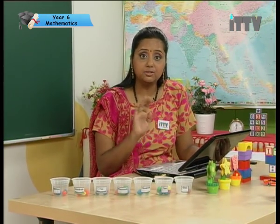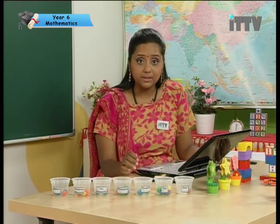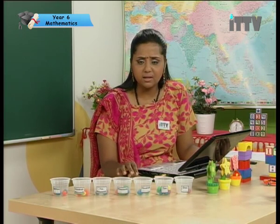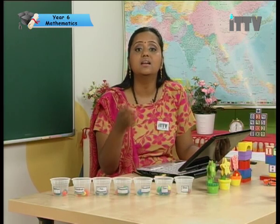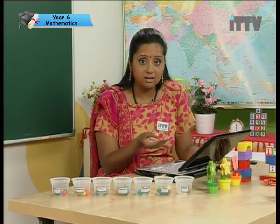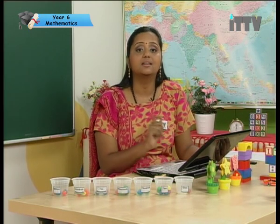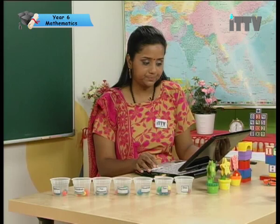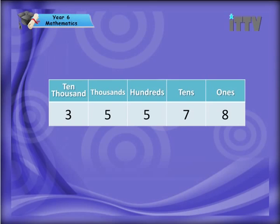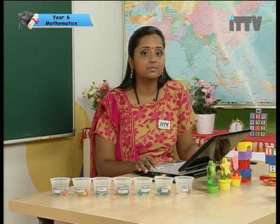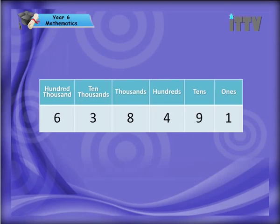Place values are very important. You'll be using this in future chapters in Standard Six and Form One and Form Two, so please concentrate. Place values determine the value of the digit. In Standard Four you learned up to the ten-thousand place value. Let's read this together: thirty-five thousand five hundred and seventy-eight. In Standard Five you did the hundred thousands. How would you read this number?